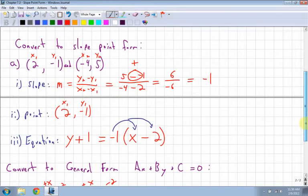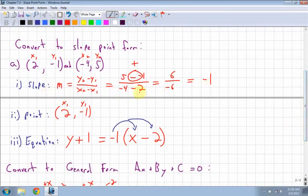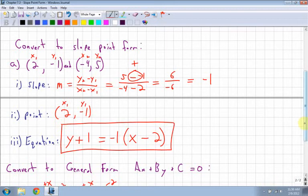And remember that your slope point form—you need your slope, you need a point, and then you can just write it in that form using y minus y₁ equals m times x minus x₁.